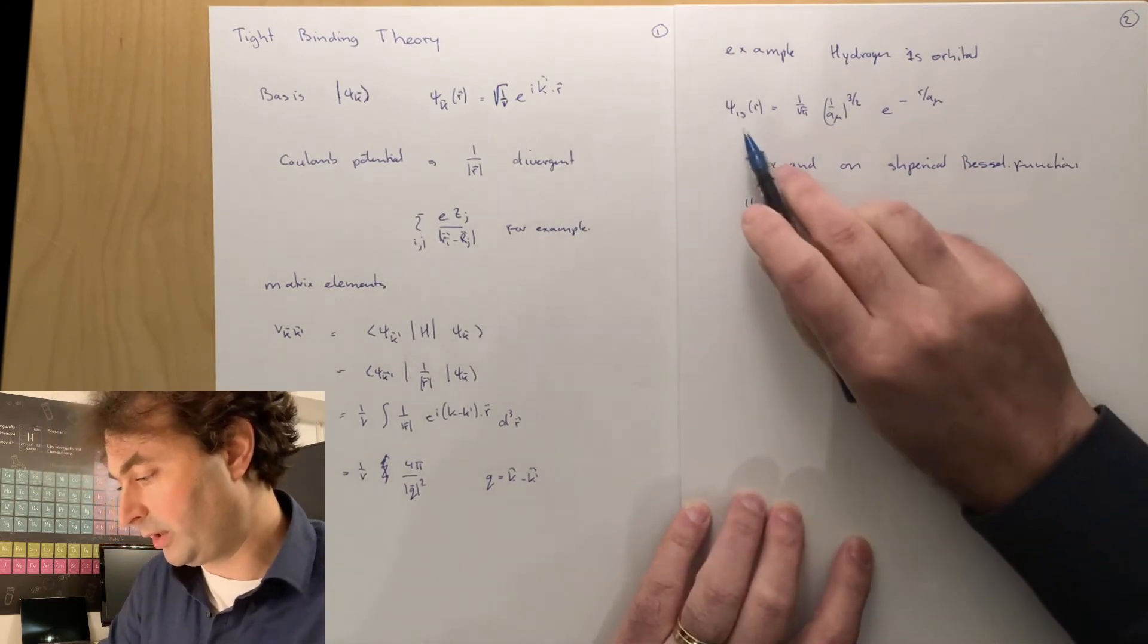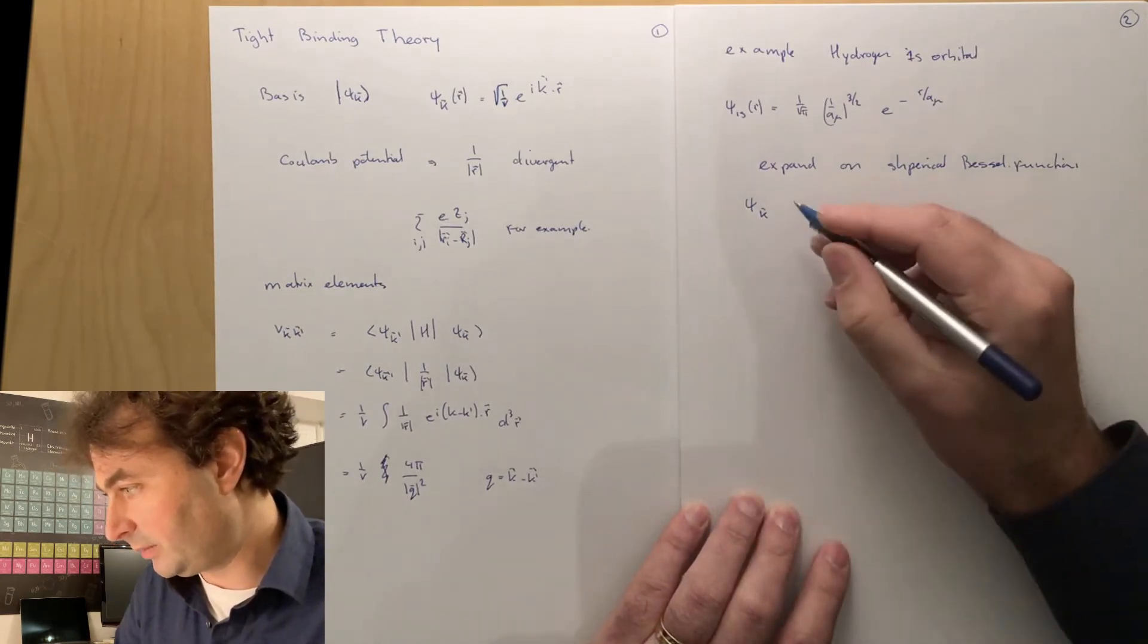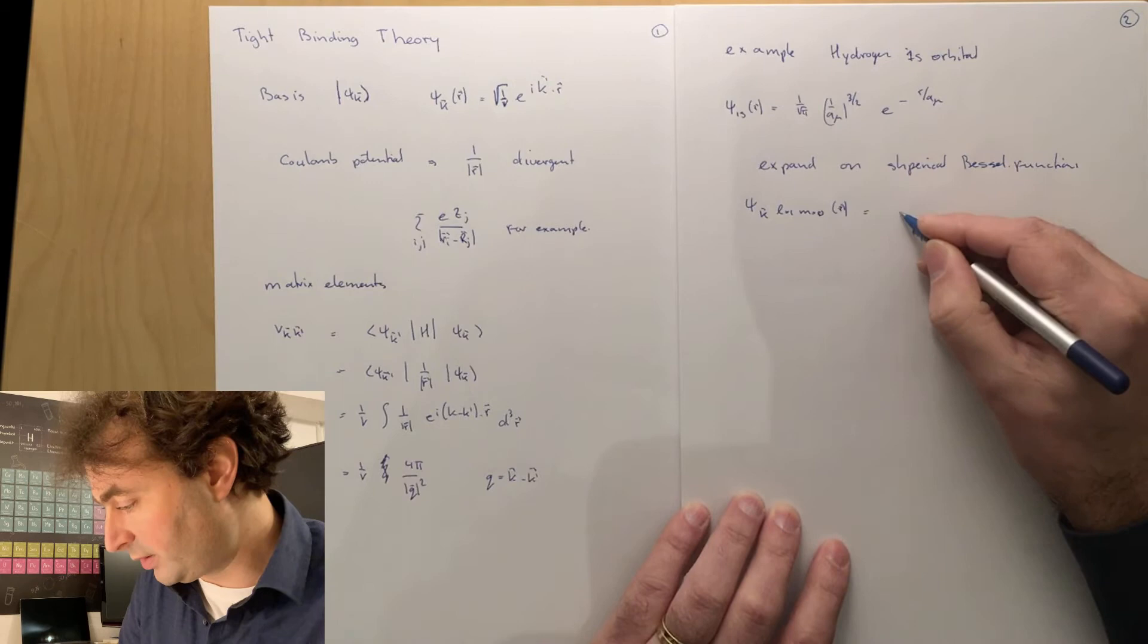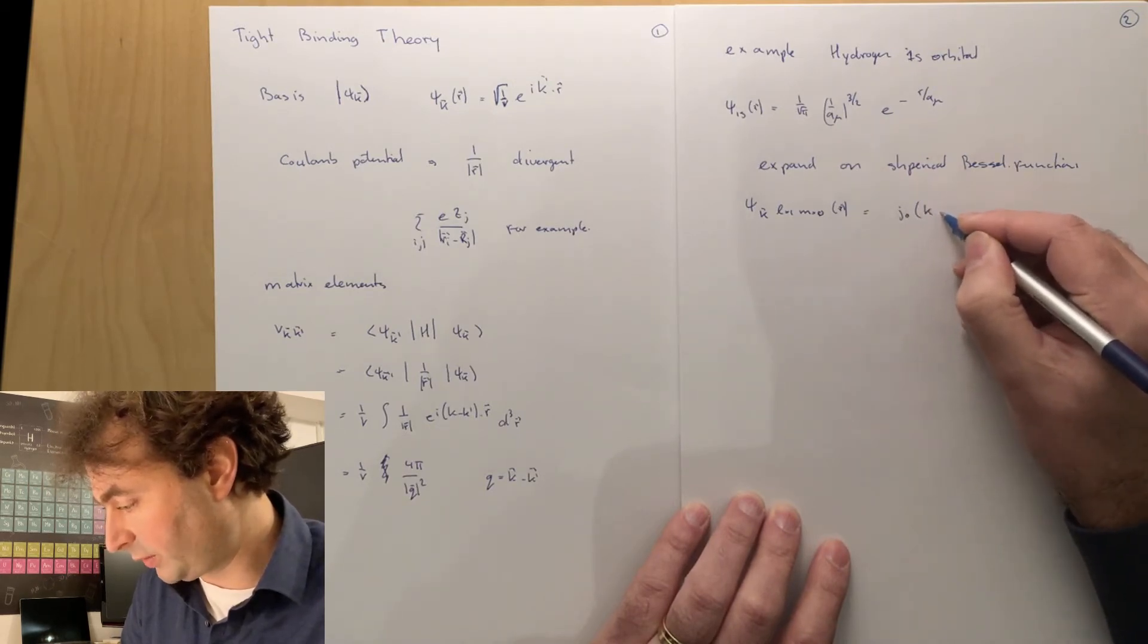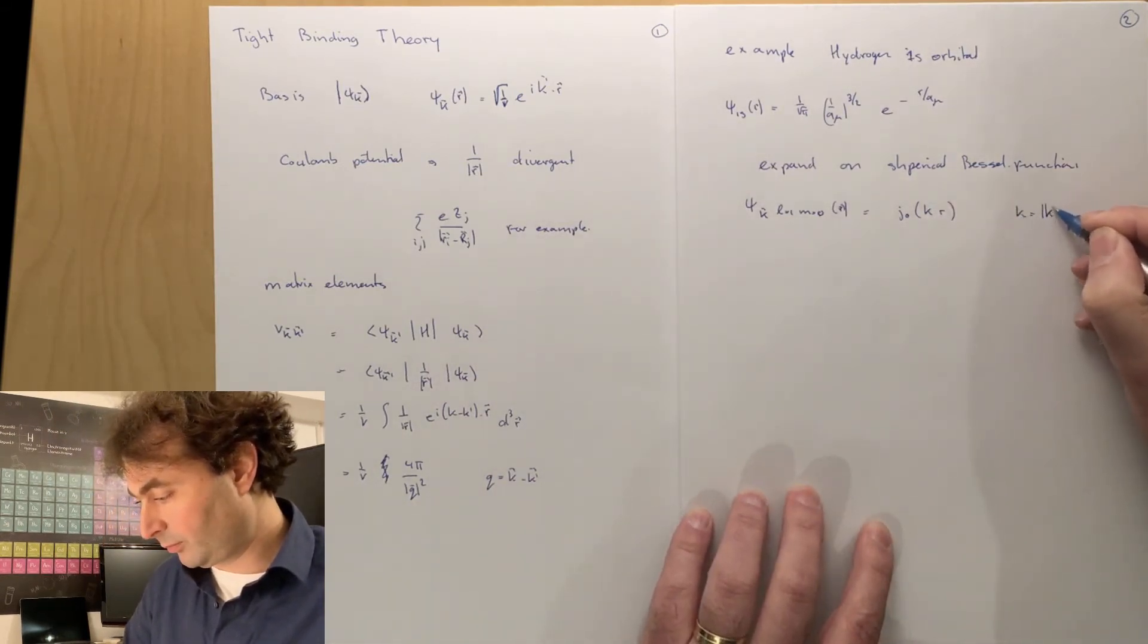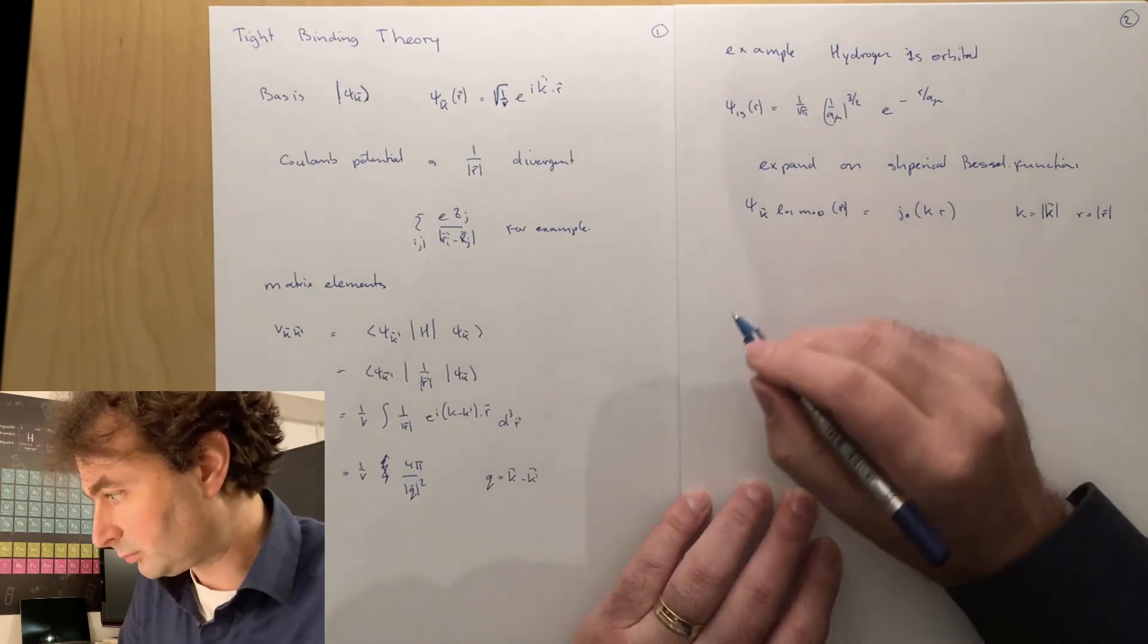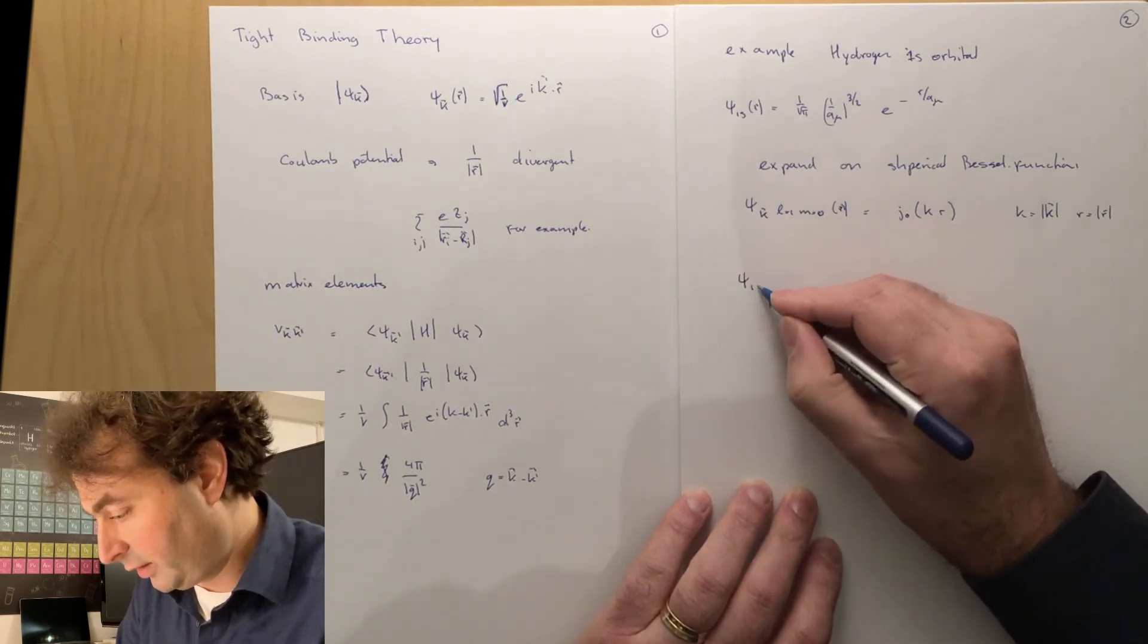So we want to expand on the spherical Bessel functions. And we are looking at the 1s spherical Bessel functions. So we have k, l is 0, m is 0 of r, which is j0, the spherical Bessel function of k times r, where these are the norm of the vector.